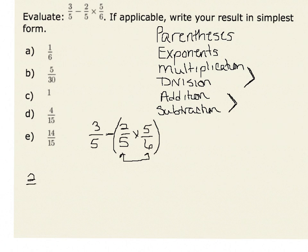Therefore, 2 fifths times 5 sixths is the same as 2 times 5 or 10 over 5 times 6, which is 30. Then we can simplify 10 thirtieths to give us 1 third.